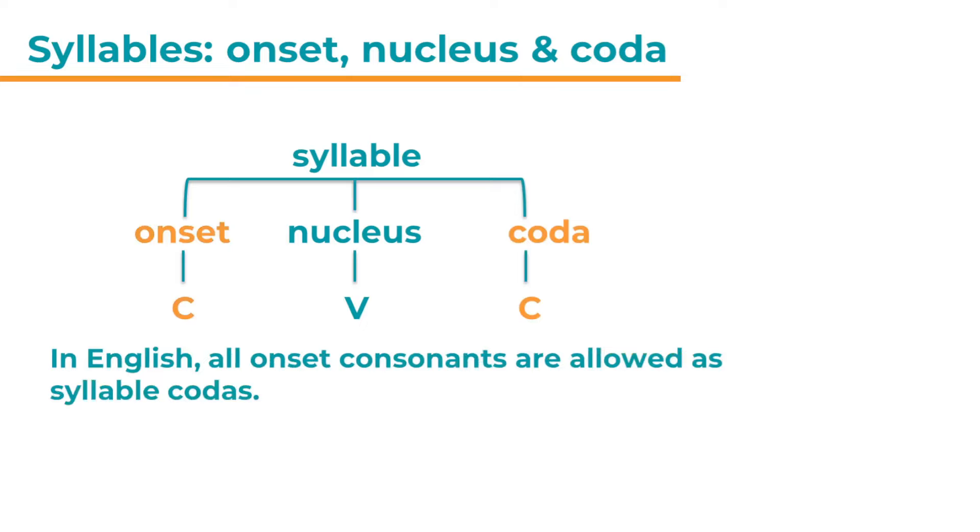Now in English, all onset consonants are allowed as syllable coders. Apart from h.